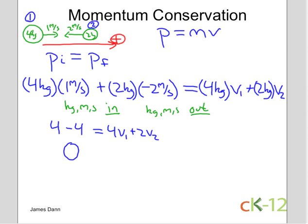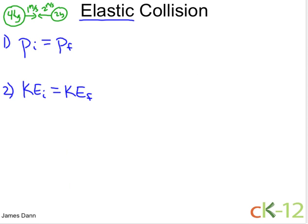Four times one is four, and two times negative two is minus four, giving four V1 plus two V2. Four minus four is zero, so the initial momentum is zero — not because nothing is moving, but because the momentum going right is balanced by the momentum going left. Solving this, V2 equals negative two V1. In the final situation, the two kilogram ball should have twice the speed of the four kilogram ball and in the opposite direction.